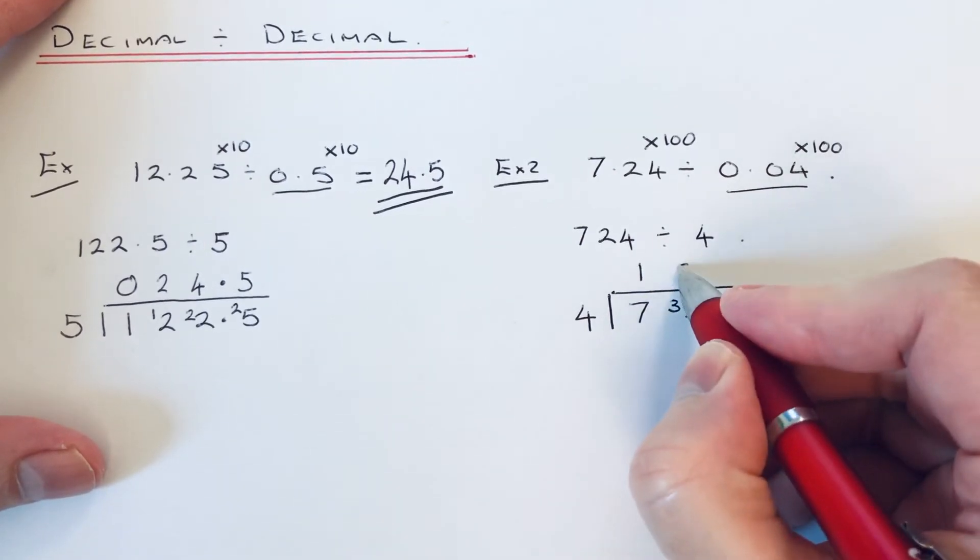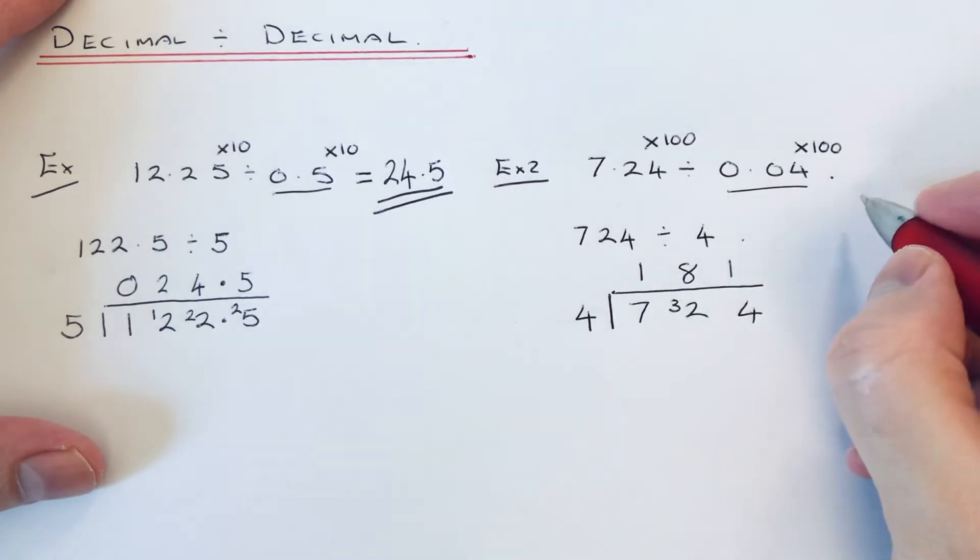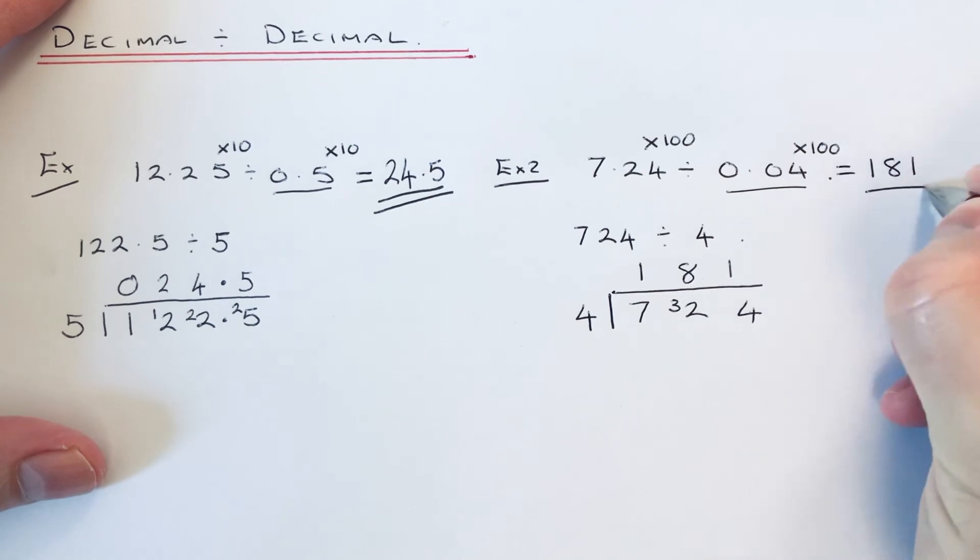32 divided by 4 is 8. 4 divided by 4 is 1. So the answer is 181.